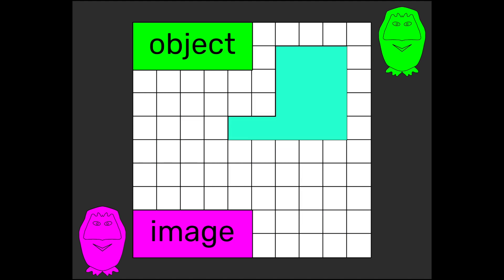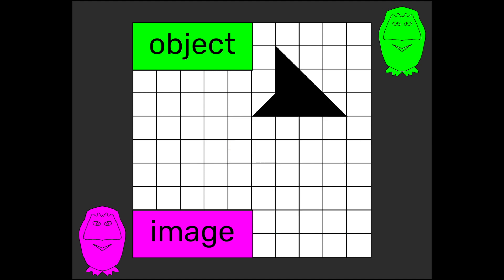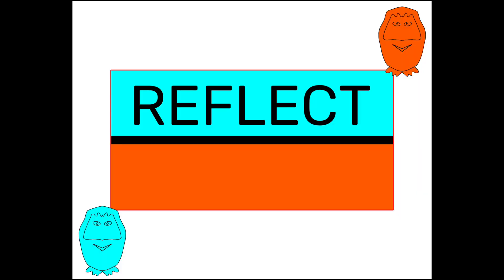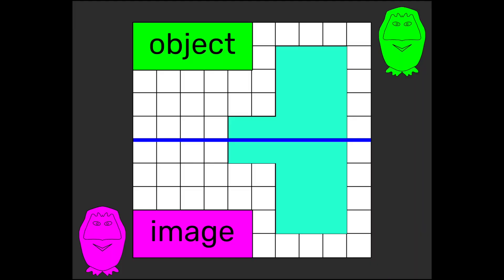Take an object and a mirror line, an image you can make. Keep your distance from the line the same, then you'll make no mistake. Take an object and a mirror line, an image you can make. Keep your distance from the line the same, then you'll make no mistake. Reflect, reflect, reflect, all you have to do to reflect. Keep your distance from the line the same, then don't forget to check.